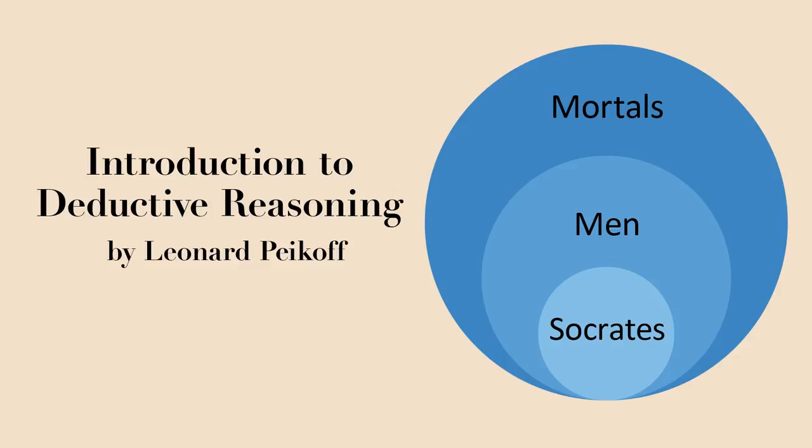We use these terms truth and validity in a very specific way. We only apply the term truth — or its negation, falsehood — to the premises or to the conclusion. The terms truth and falsehood are applied to the separate ingredients: the premises and the conclusion. The term validity is applied to the reasoning itself, to the relation of the premises to the conclusion. You can say: is the inference valid? Is the reasoning valid? Is the argument valid? — meaning simply, does the conclusion follow from the premises?